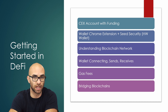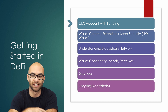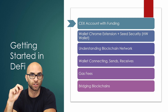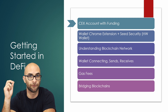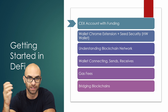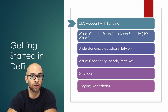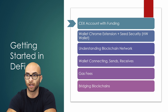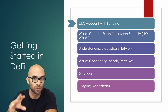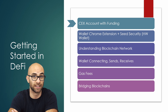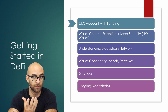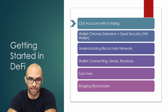The first thing you're going to need is some sort of centralized exchange account with funding already in it. Something like Ethereum, Solana, or Binance Smart Chain — whatever ecosystem you want to interact with is the token or the crypto you're going to want to have.